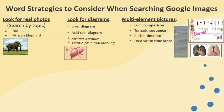Look for multi-element pictures. As you can see in the list: lung comparison, tornado sequence, Barbie timeline, dust storm time-lapse. These are all keywords that will allow you to find multiple things on a picture because you're asking for a comparison, sequence, or multiple things on a timeline. There's a Barbie timeline with significant moments in the development of Barbie, two lungs — one healthy, one unhealthy — and a sequence of a time-lapse showing a car driving into a dust storm and becoming obscured after four frames.